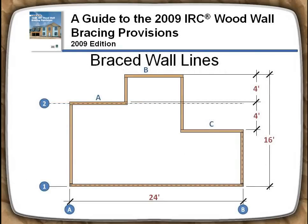A braced wall line drawn on a set of house plans will not be drawn through all of the walls near it. Walls are frequently offset from one another. In the IRC, when a potential braced wall line is drawn along plans, any parallel wall within four feet of the wall line is considered part of the wall line. In the example, if a braced wall line is placed along wall A, then walls A, B, and C will be within four feet of the braced wall line.